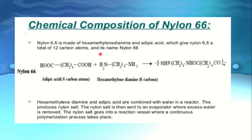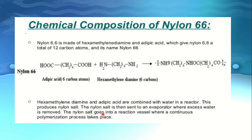Chemical composition of nylon 6,6: nylon 6,6 is made of hexamethylene diamine and adipic acid, giving nylon 6,6 a total of 12 carbon atoms. Adipic acid has 6 carbon atoms; hexamethylene diamine has 6 carbons. Hexamethylene diamine and adipic acid are combined with water in a reactor, producing nylon salt. The nylon salt is then sent to an evaporator where excess water is removed. The nylon salt then goes into a reaction vessel where a continuous polymerization process takes place.